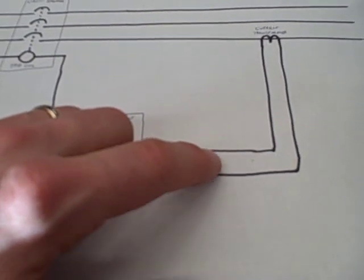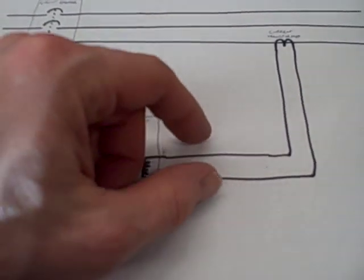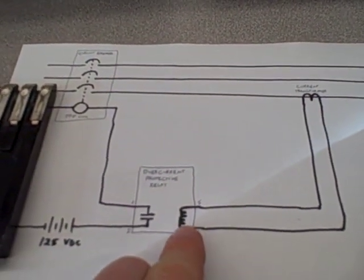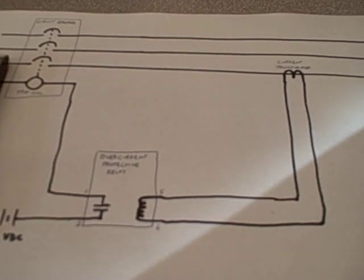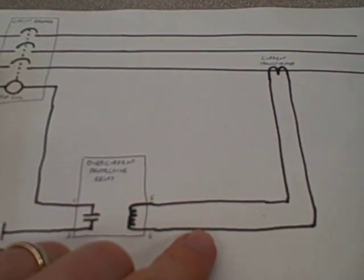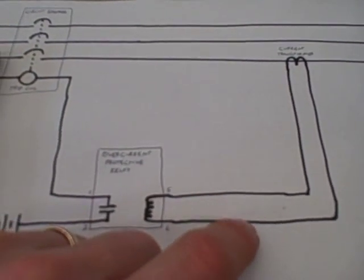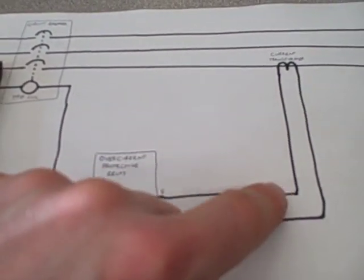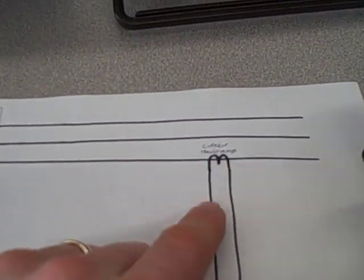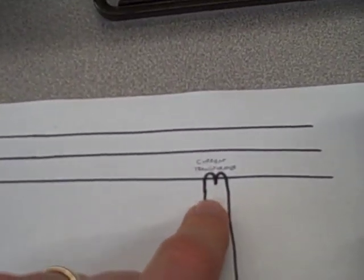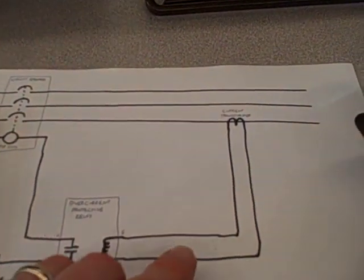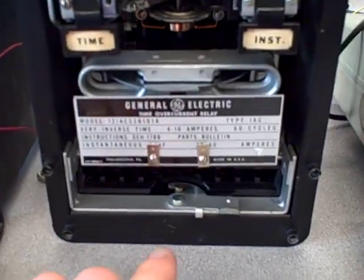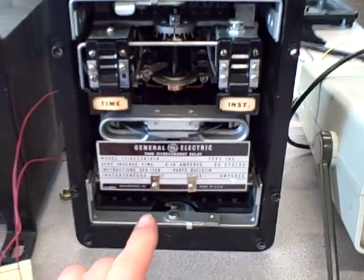It first short circuits the current transformer's output and then breaks the contacts between the CT and the protective relay. In switch terms, it would be referred to as a make-before-break switch contact. It makes the shorting contact before it breaks the contact with the relay, and thereby maintains continuity in the secondary circuit at all times. So that does not arc, does not produce high voltage, does not destroy itself. Very important safety concern when dealing with current transformers, and it's handled for you automatically here by removing the paddle on this general electric protective relay.